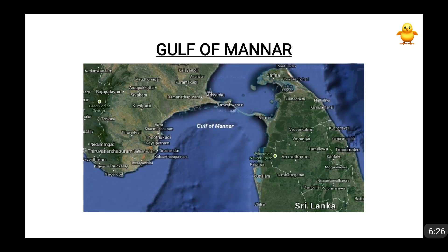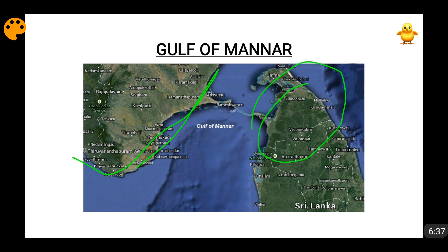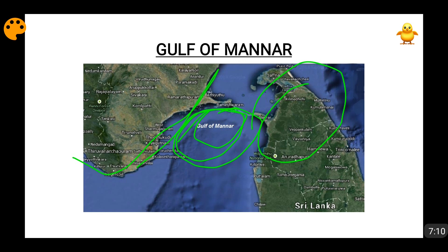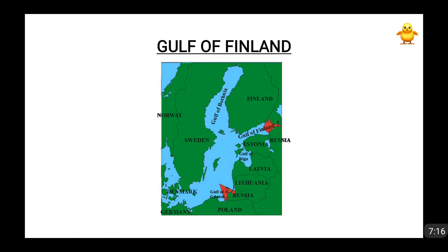Coming to the Gulf of Mannar. This is at the southeastern tip of India and the northern tip of Sri Lanka — in between, the Gulf of Mannar is located. This is very important because there are around 21 small islands here which have been collectively declared as the Gulf of Mannar Marine National Park, with a 10-kilometer buffer zone. It was declared a Marine National Park in 1986 and upgraded to a Biosphere Reserve in 1989. There is also a bridge called Adam's Bridge in between.